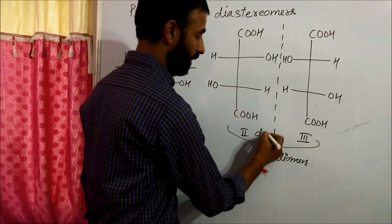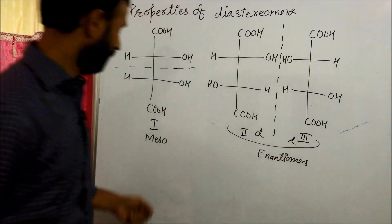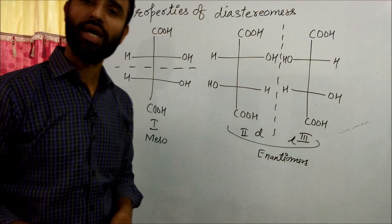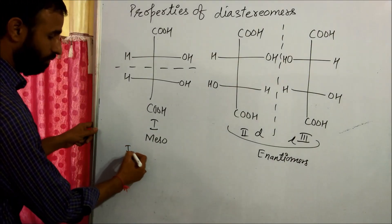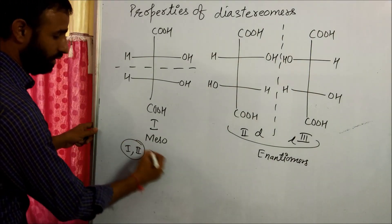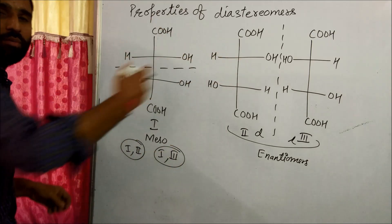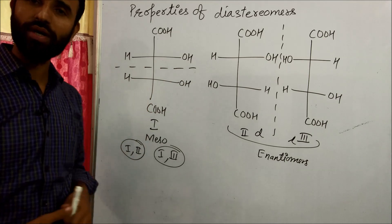Now one and two and one and three, they are pair of diastereomers. Now in these pairs there is no mirror image relations. Their structures are also different.